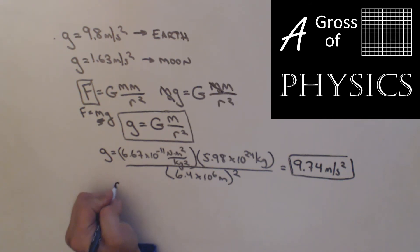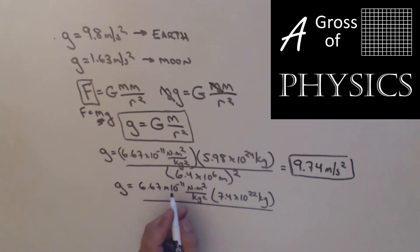Now for the moon, same process. g equals 6.67 times 10 to the negative 11 Newton meters squared over kilograms squared. The mass of the moon is 7.4 times 10 to the 22 kilograms, and then we divide that by the radius of the moon, which is 1.74 times 10 to the 6 meters, that whole quantity squared. When we multiply, we have 6.67 EE negative 11 times 7.4 EE 22, divided by 1.74 EE 6 squared, and I get 1.63 meters per second squared.